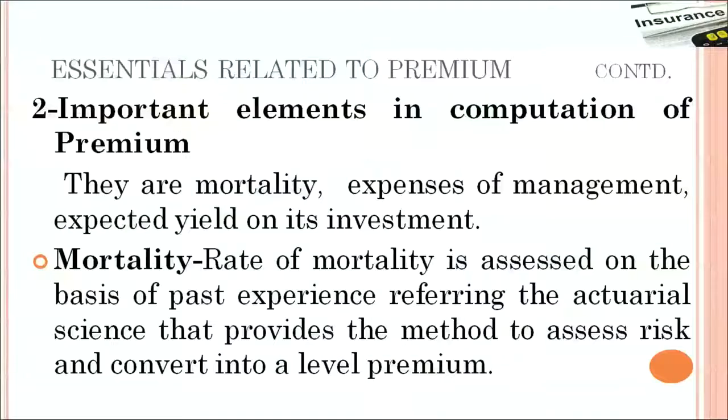Let us understand what are the important elements in computation of premium. They are basically mortality, expenses of management, and expected yield on investment. The rate of mortality is generally assessed on the basis of past experience, which is done by the actuarial specialist. It is based on life expectancy and what past mortality statistics and trends have been like. On the basis of that, they convert it into a level premium.